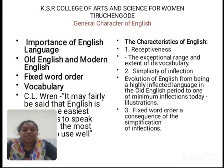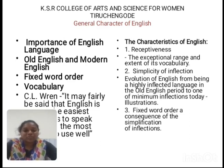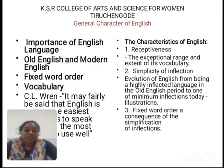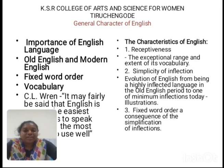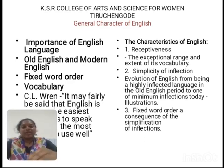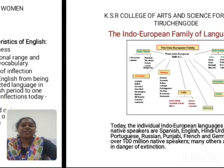To convey a sentence clearly, we use the SVO pattern — Subject, Verb, Object. The subject comes at the beginning, the verb comes next, followed by the object. For example: 'My father' is the subject, 'gave' is the verb — the action — and 'a pen' is the object. So the sentence is: 'My father gave a pen.' That is one of the rules and regulations of sentence pattern.